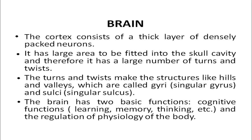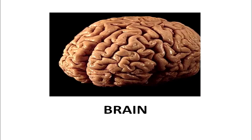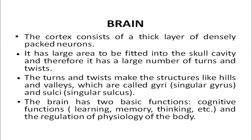The turns and twists that make structures like hills and valleys in the brain are called gyri (singular: gyrus) and sulci (singular: sulcus). The brain has two basic functions: cognitive functions, related to how you learn, memorize, and your thought process; and the regulation of the physiology of your body.